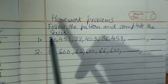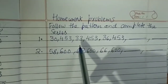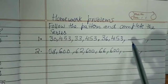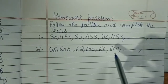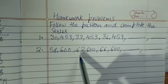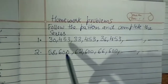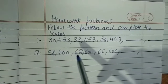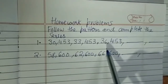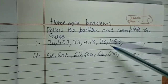Homework problems: follow the pattern and complete the series. First one is 30,453, then 33,453, then 36,453 — find the 4th and 5th blank. It is similar to what I have done previously. Second one: 58,600, 62,600, 66,600. In these sums, find the difference between the first two numbers to get a particular value, then add it repeatedly to find each next answer.